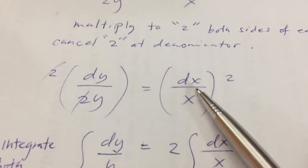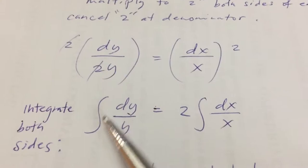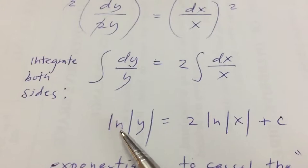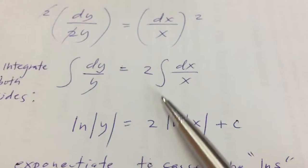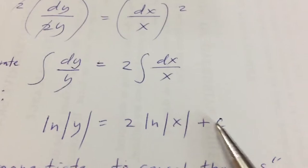And by integrating both sides, the result would be ln|y|, or the integration of 1 over y dy. At the right side of the equation, that would be 2 ln|x| plus c - you can include plus c.